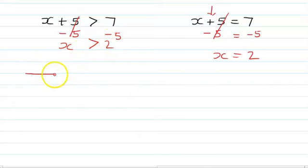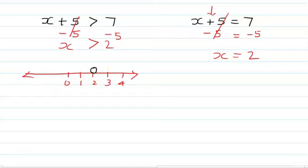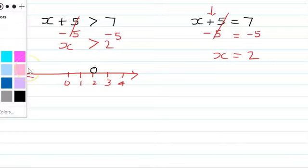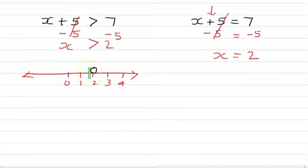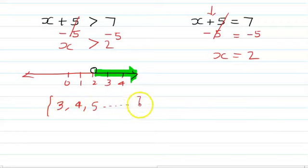So what is extra we are doing? Just draw a number line and write 0, 1, 2, 3, 4. Greater than 2 — is 2 included or excluded? Since there is no equal sign, 2 is excluded. We are moving to the right side. So the answer is: 2 is not included, so the solution set is 3, 4, 5, and so on.